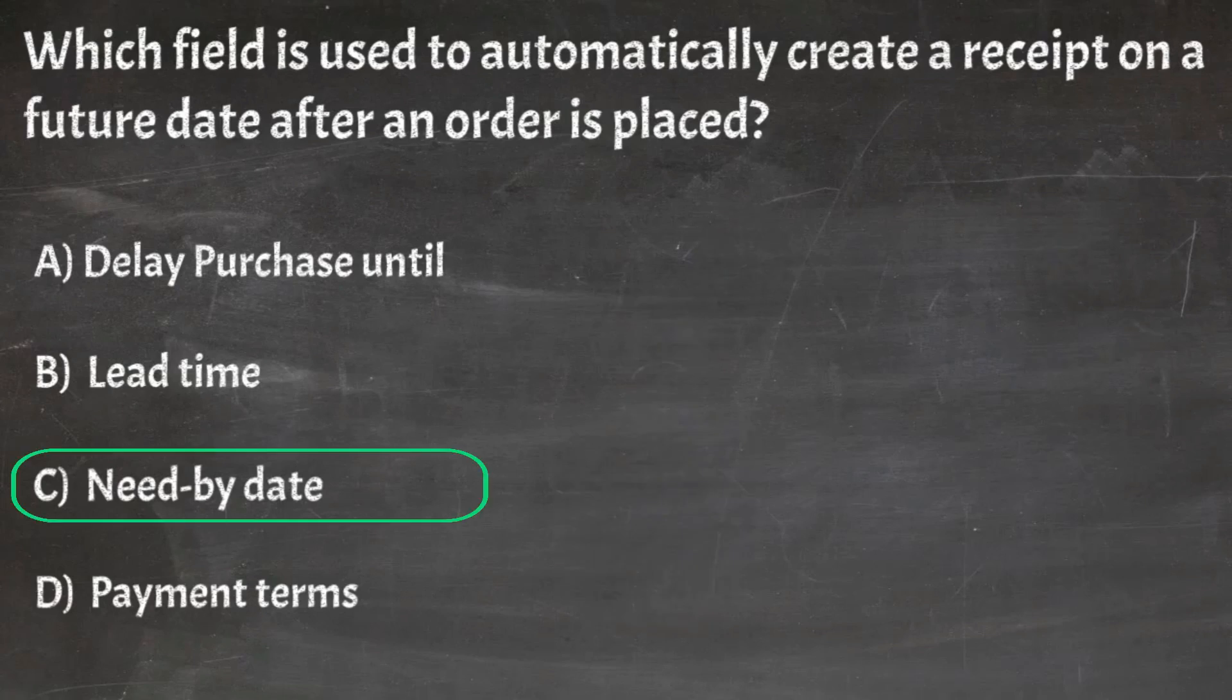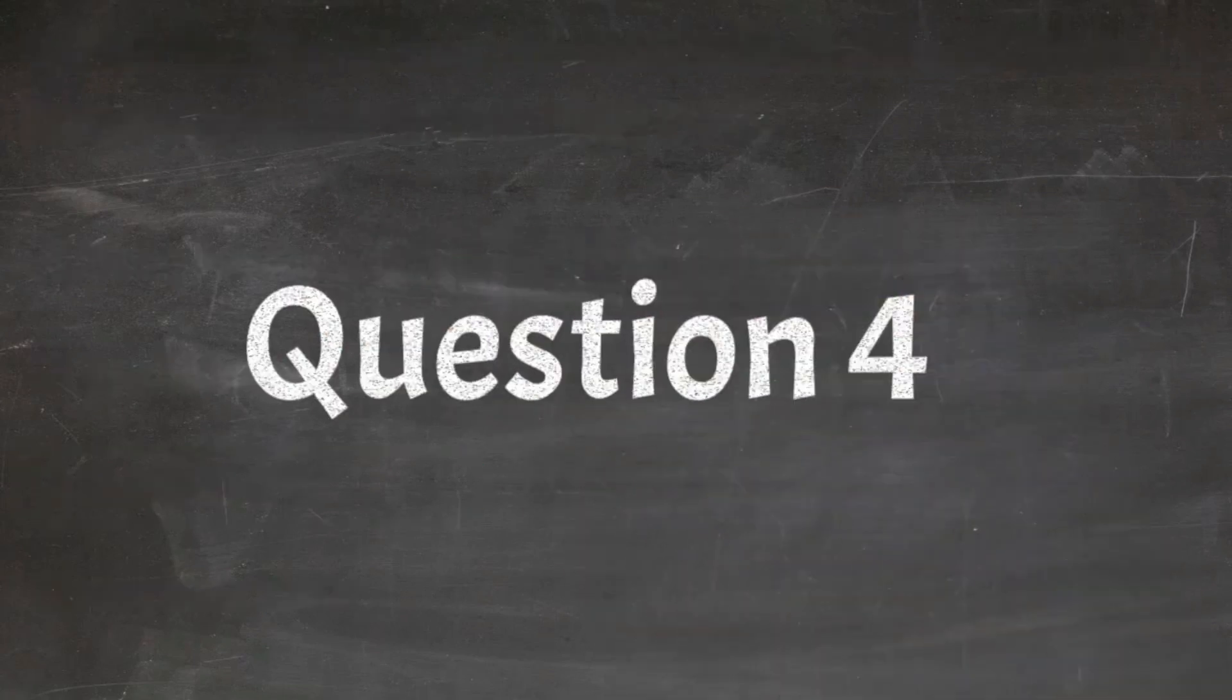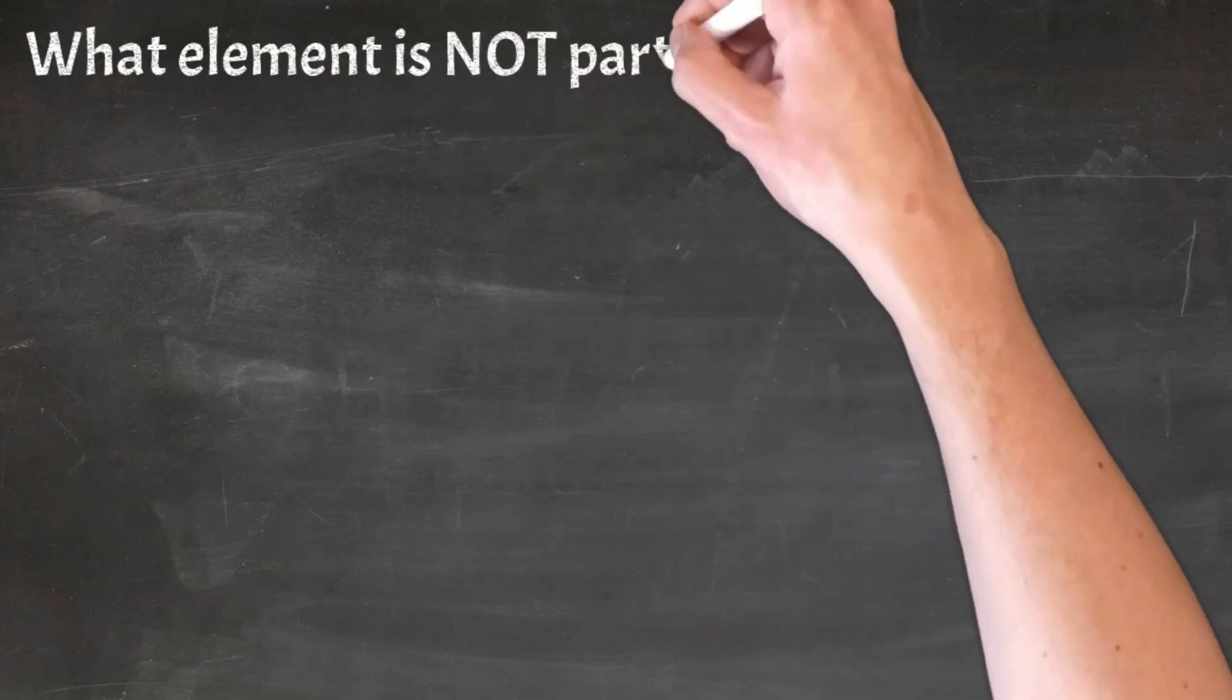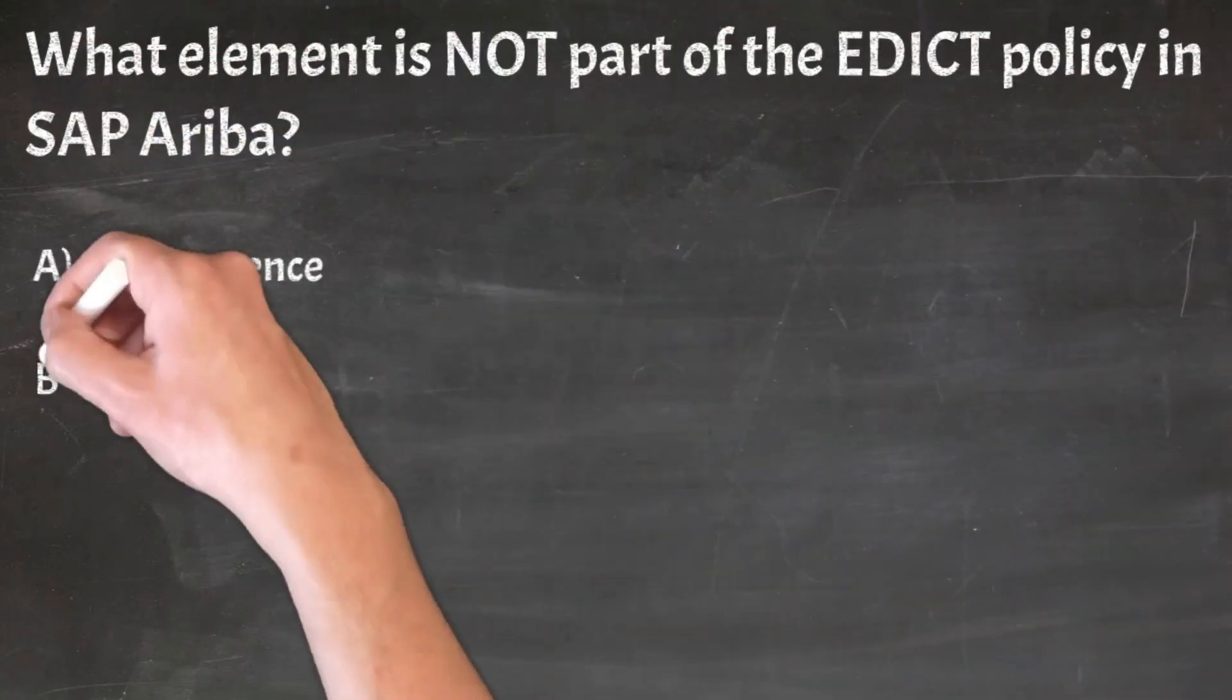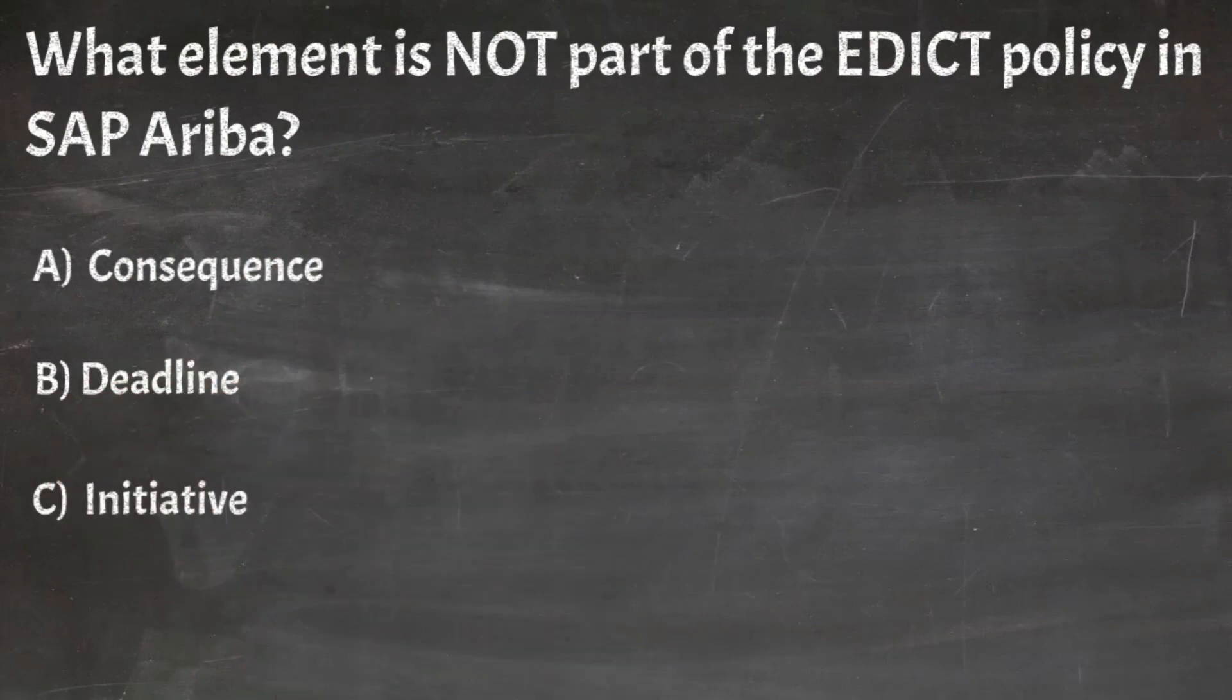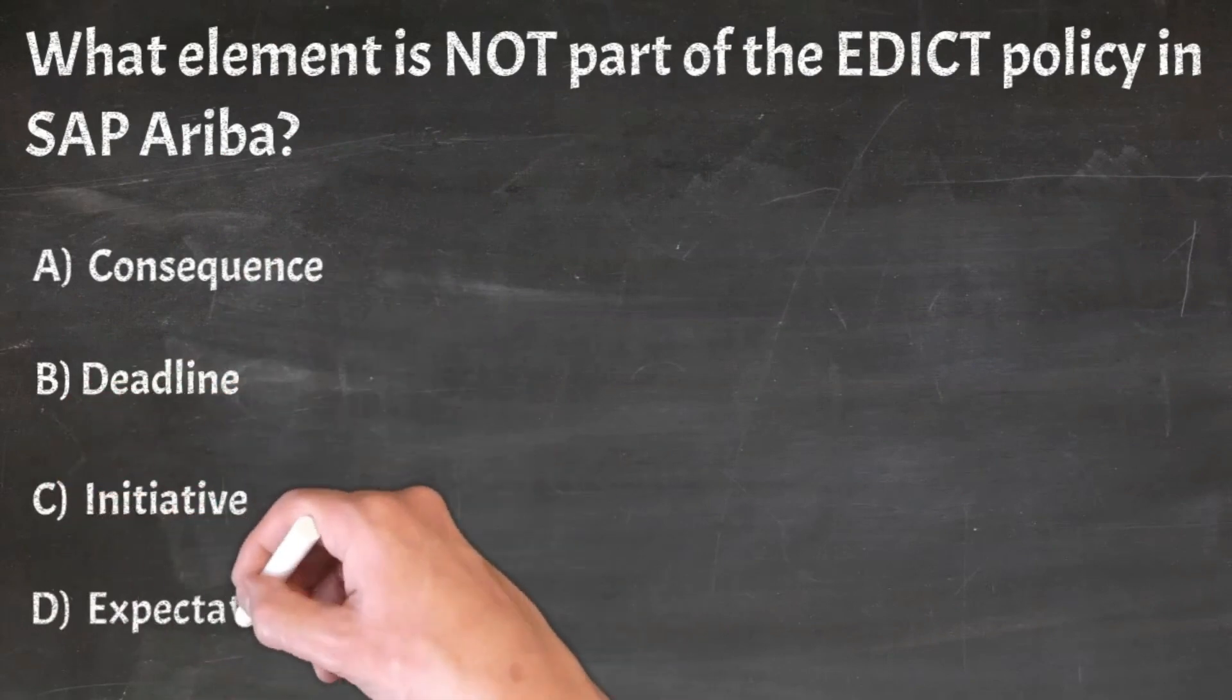Correct answer: C. Need by date. Question 4: What element is not part of the EDICT policy in SAP Ariba? A. Consequence, B. Deadline, C. Initiative, D. Expectation.